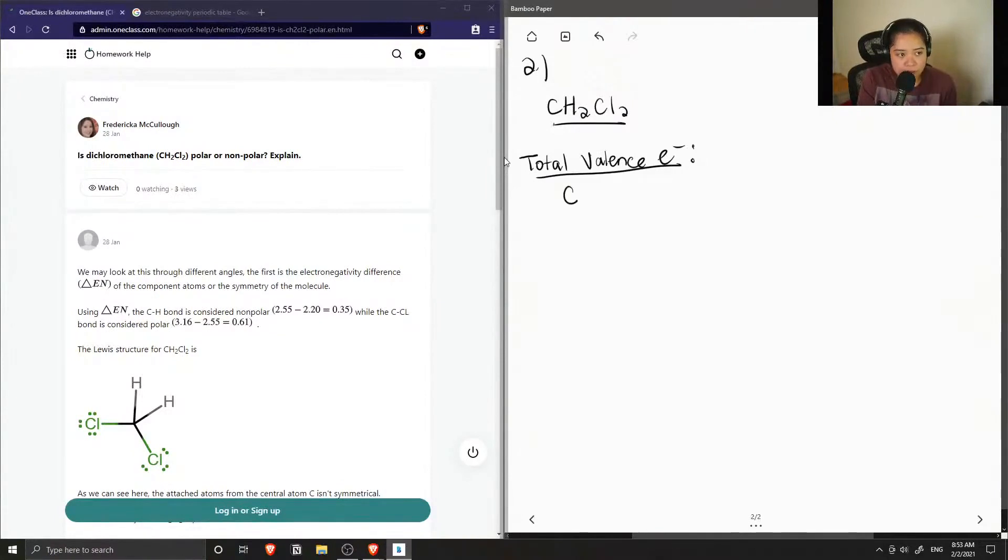Okay, so carbon has four valence electrons. Hydrogen has one. And since we have two hydrogen atoms, we multiply this by two.